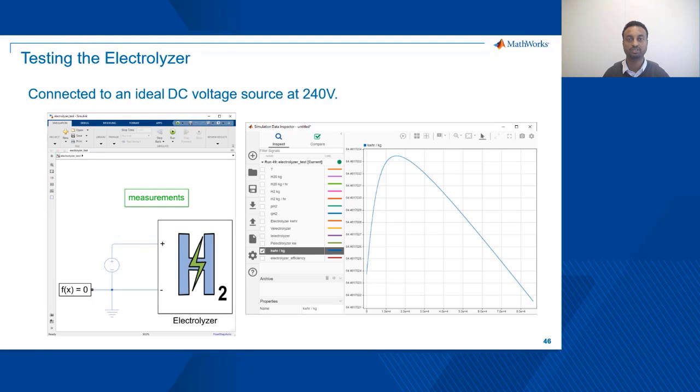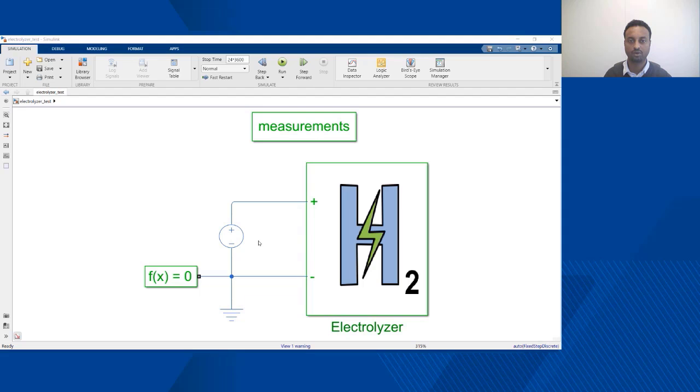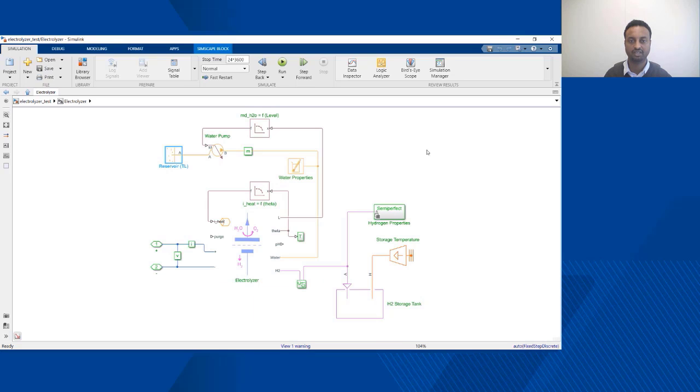The last major component in our green hydrogen production system is the electrolyzer which converts water into hydrogen using electricity. Let's explore the model and run some simulations to understand how it operates. Here is a standalone model of the electrolyzer connected to a standard voltage source. I can run multiple simulations with different input voltage sources to understand its detailed behavior.